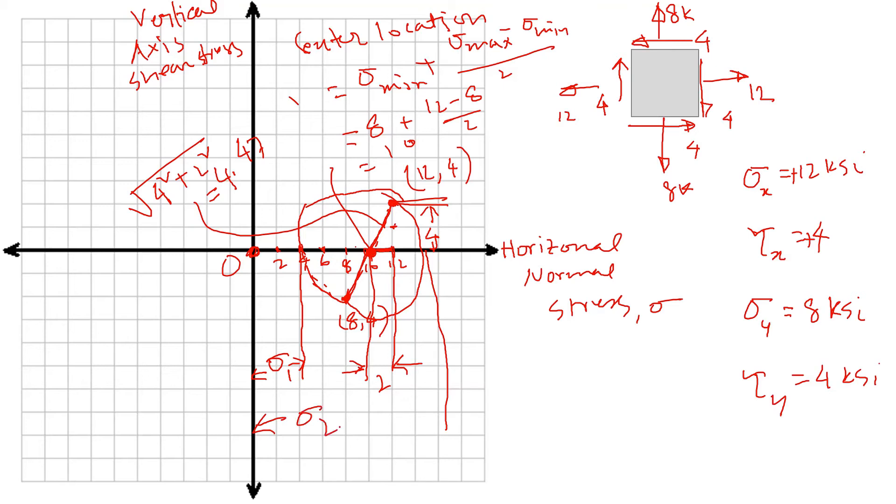So σ₁, we can calculate. We know that this distance is 10—the circle is 10 away from the origin—and then we know the radius. So what we can find out is σ₁ would be then 10 minus the radius, 4.47. I have calculated that. Let's see what we got: 5.53. So that's my σ₁. Now σ₂ is the 10 plus 4.47, which is 14.47.